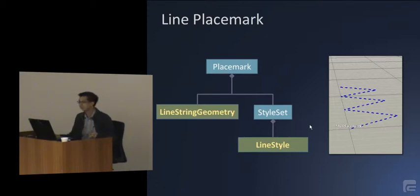Then there's the line, or more specifically it's the line string geometry, because one line is just 2 points. So you have a connected bunch of lines, it's called a line string. So you can give it a style. In this case, you set it to blue color. You can change the pattern of the line, and you can even animate the line also to indicate direction, which you will see later.